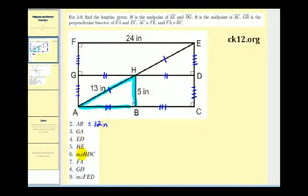Next question is determine the length of GA. GA is this segment here, but GA is congruent with HB, so GA would be 5 inches.